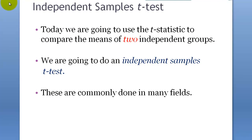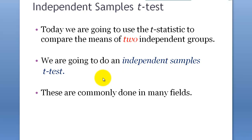This one is called the independent samples t-test. It is called 'independent samples' because, unlike the earlier example, we are comparing two independent groups. Earlier it was one group doing a pre and post test — more like a pre-post experiment. But this is two independent groups, and we are trying to compare them to find if they are different from each other or not.